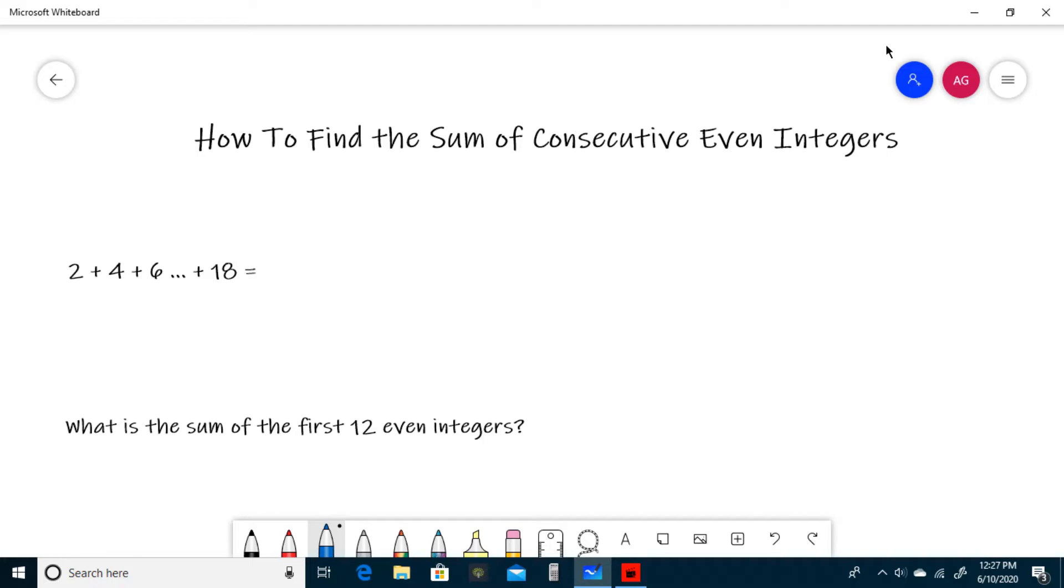For our first example, we have 2 plus 4 plus 6 all the way to plus 18. To find this sum, all you have to do is take the last term in your sequence, or 18, and divide it by 2. 18 divided by 2 is 9.